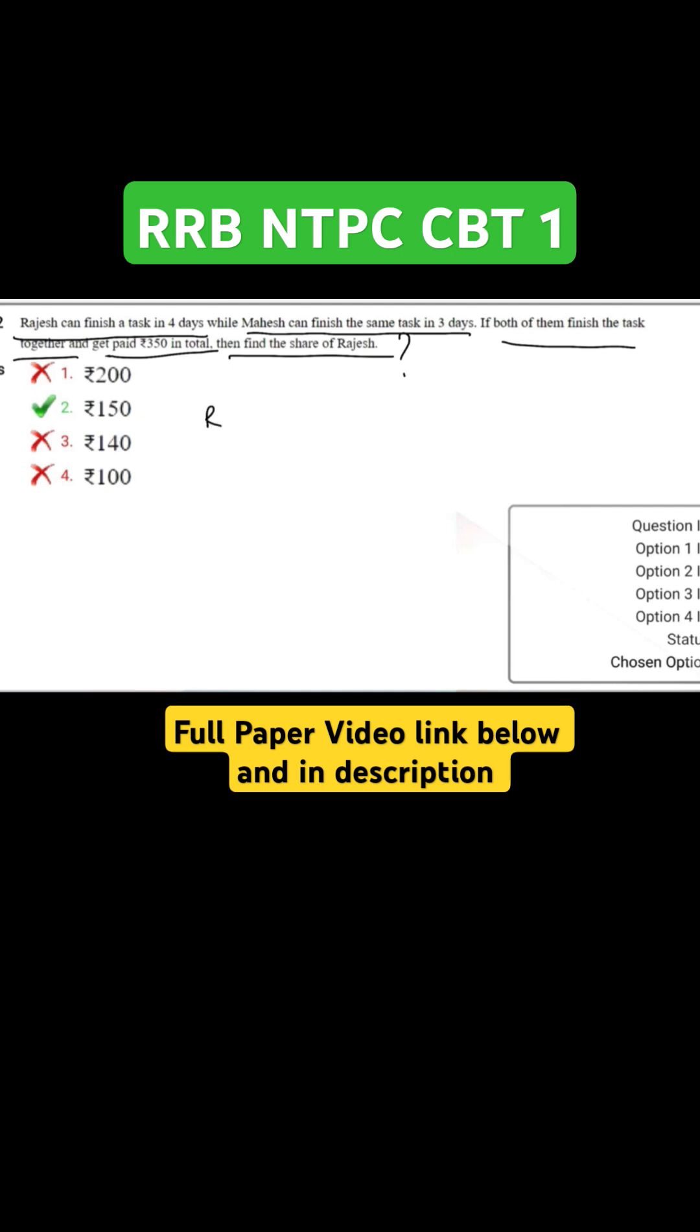Given, Rajesh will finish in 4 days and Mahesh in 3 days. We know that LCM of 4 and 3 is 12, which is total work, and the efficiency becomes 3 and 4 here.